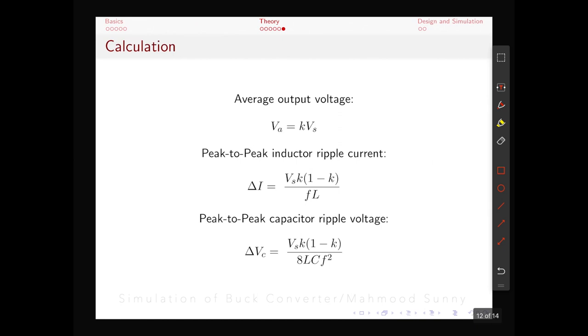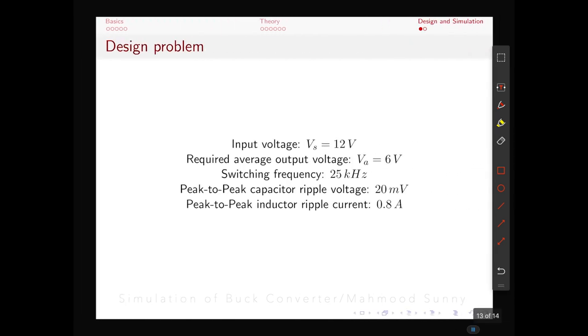And the peak to peak capacitor ripple voltage delta Vc depends on the following formula. Supply voltage Vs multiplied by duty ratio cycle K multiplied by 1 minus K divided by 8 inductor value L capacitor value C multiplied by the square of the switching frequency. For our design problem which we will simulate today.